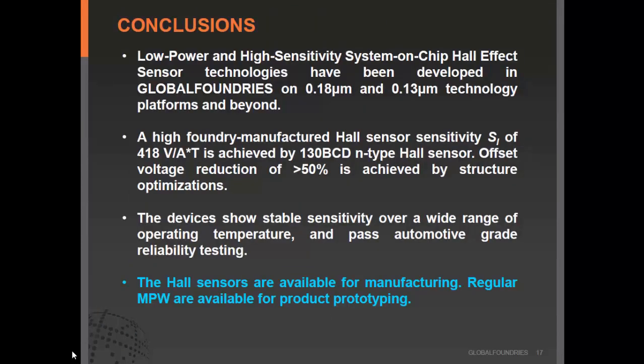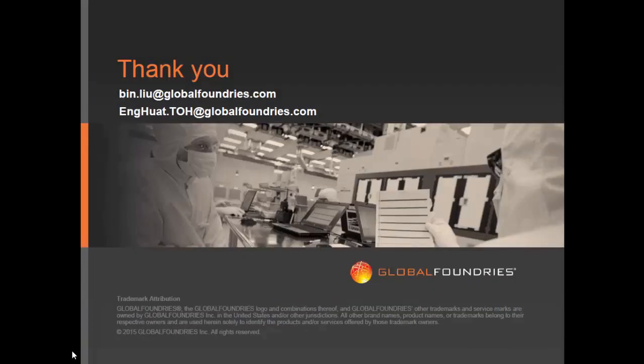In conclusion, today I shared our low-power system-on-chip Hall effect sensor technology on our 0.18 and 0.13 micrometer technology nodes, which will be further extended to more advanced nodes. A high Hall sensitivity of 518 V per ampere per Tesla is achieved by our 130 BCD Hall device without any additional mask. Offset voltage reduction of more than 50% is achieved through structural optimization. The device shows very stable sensitivity over a wide temperature range and passes automotive Grade 0 reliability tests. All devices are available for manufacturing now, with regular MPW runs for prototyping. We welcome collaboration from industry and academia — please drop us an email if interested.